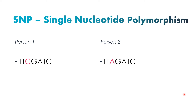A SNP occurs when a nucleotide at a specific location in the chromosome differs between individuals that are being compared. It's basically a known or yet to be discovered variation in a single nucleotide in a genetic sequence.